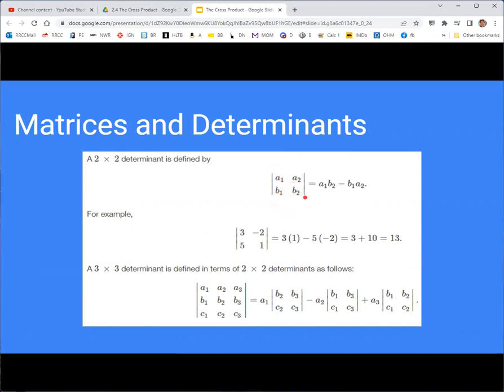So if I have a two-by-two matrix of numbers, a1, a2, b1, b2, then the determinant is just the difference of the diagonal, a1 times b2, with the off-diagonal, b1 times a2.